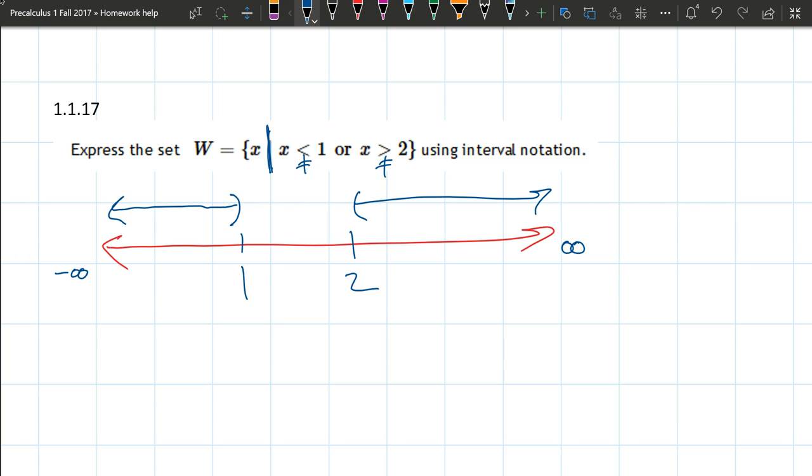So this interval here goes from negative infinity up to 1. You never actually hit negative infinity, so it's always going to be open. Now for us, you don't actually equal 1, so we have the open symbol or the parenthesis. So that takes care of this first interval.